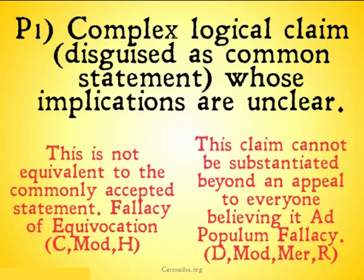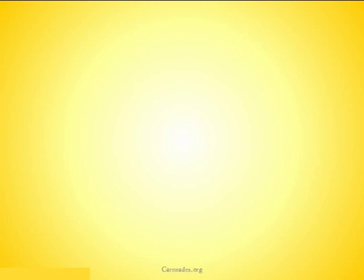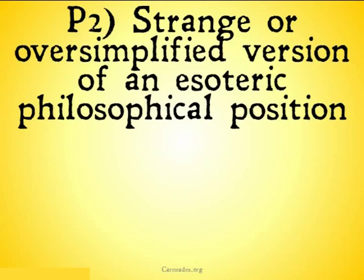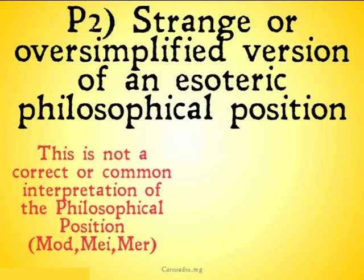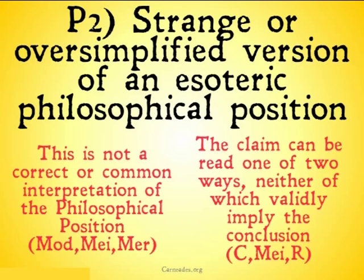I'm not going to go through how each of these objections can be leveled at these arguments individually, because I've already done that — check out the previous videos. Second: a strange, oversimplified version of an esoteric philosophical position. We can say this is not a correct or common interpretation of the philosophical position. The modal ontological argument in the sense of S5, the Meinongian ontological argument in the sense that Meinong didn't agree with this argument, and the Mereological in the sense that you don't need the compositional principle in your mereology. Furthermore, the claim can be read one of two ways, neither of which imply the validity of a conclusion — where there's an ambiguous claim that is supported if read one way and implies the conclusion if read the other way, but neither reading gives you both. The conceptual, Meinongian, and religious experience arguments have this problem.